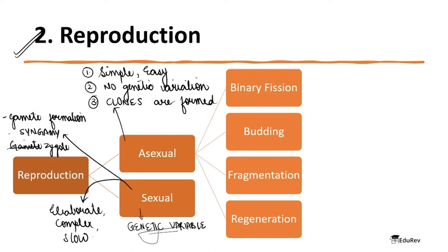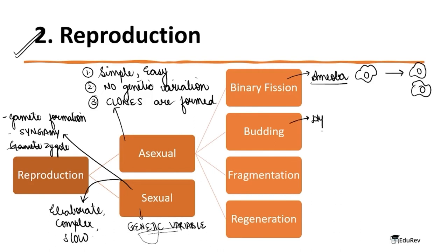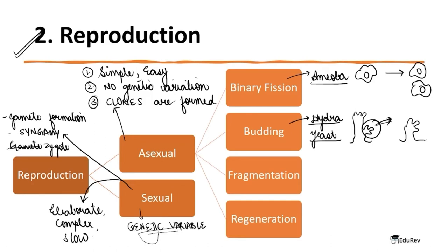Now let us study the types of asexual reproduction. The first is binary fission — a cell divides into two individuals. An example is amoeba, which just divides into two. The second is budding — examples are hydra and yeast. In hydra, a bud will just fall off and develop into a different individual altogether. So the bud detaches and forms a new individual.